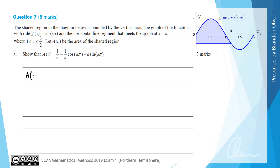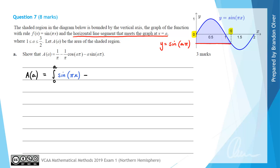To calculate the area in terms of a, we're going to evaluate the integral between 0 and a, because we go from 0 to a along the x-axis. The upper function has rule sin(πx), and then we subtract away the lower curve — the horizontal line segment that meets the graph at x = a — which has rule y = sin(aπ). So we subtract sin(aπ) in that integral, with respect to x.